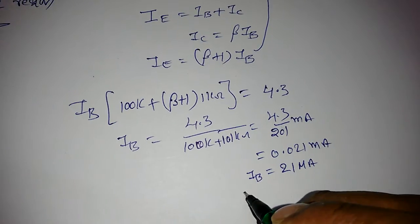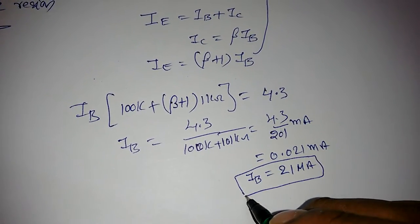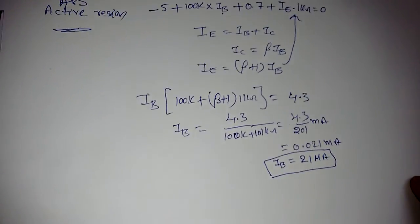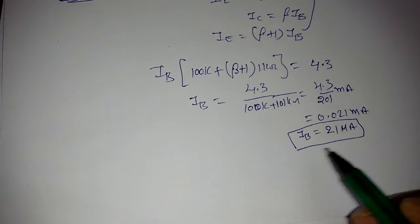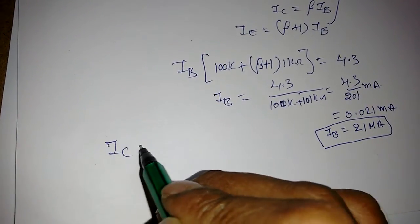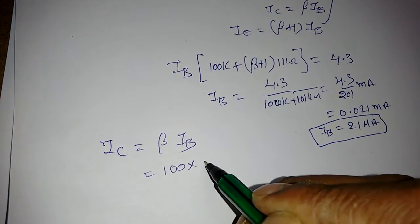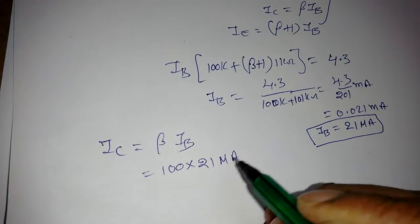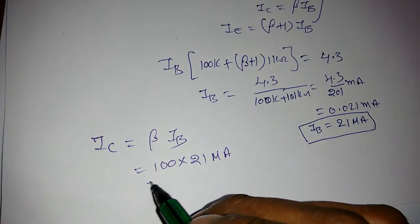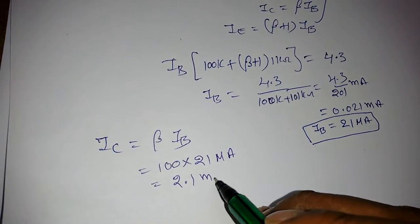Compared to the previous two questions, IB was very high; now it is 21 µA. I know IC = β × IB, so 100 × 21 µA = 2.1 mA.